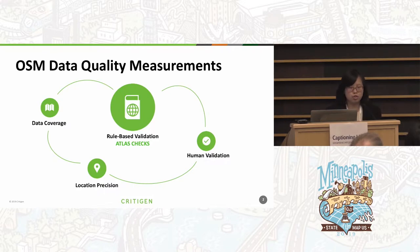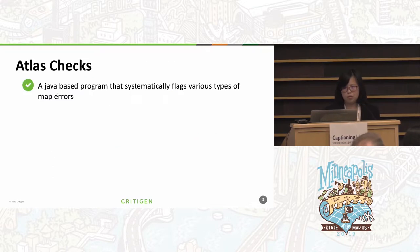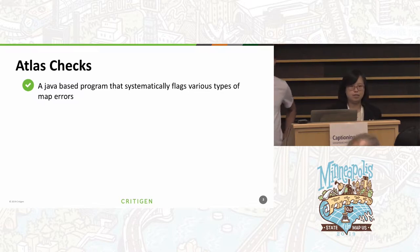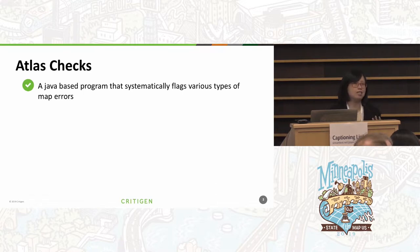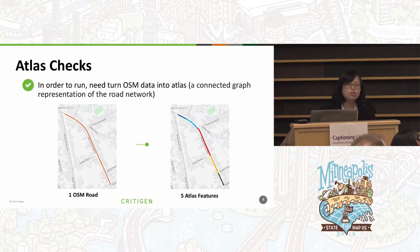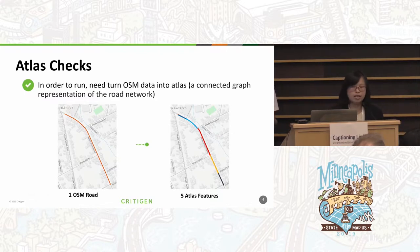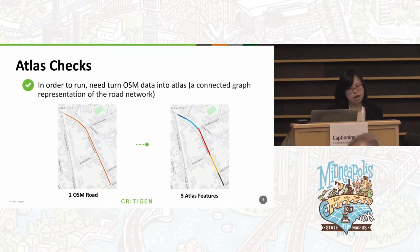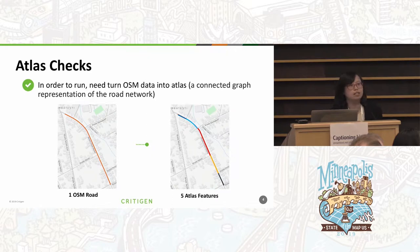Today we're going to introduce rule-based validation using Atlas Checks. Atlas Checks is a Java-based program that systematically flags various types of map errors, also including road networks. Road networks in OSM have a more relaxed and flexible mapping schema. Atlas Checks converts OSM data into an Atlas format, splitting roads into different sections — mainly at intersections — to create a connected graph representation of the road network. The program can then systematically come in and flag connections, overlapping issues, and different network problems.